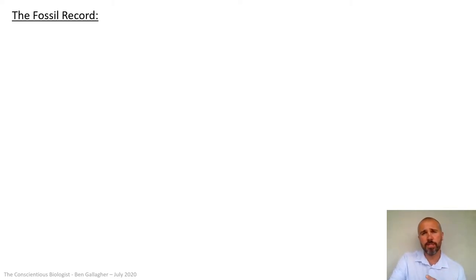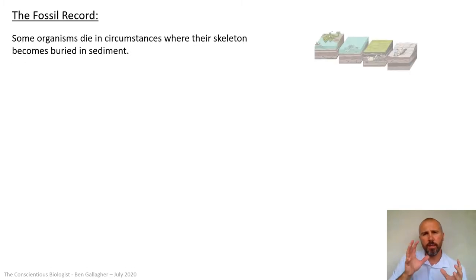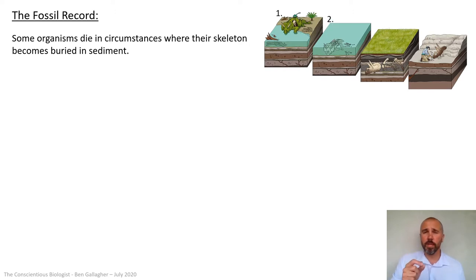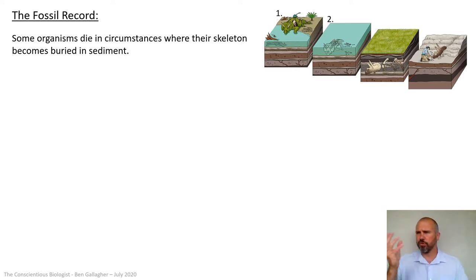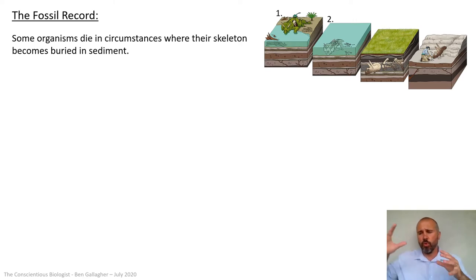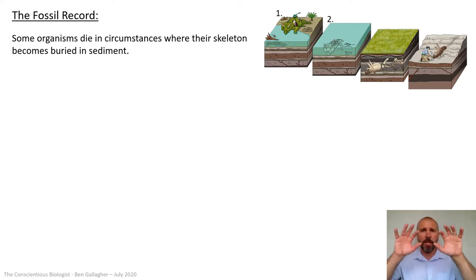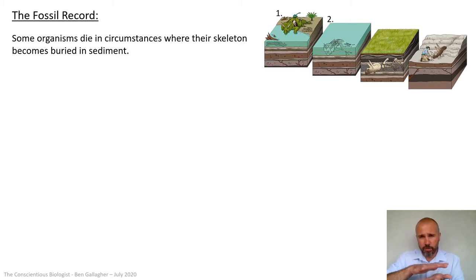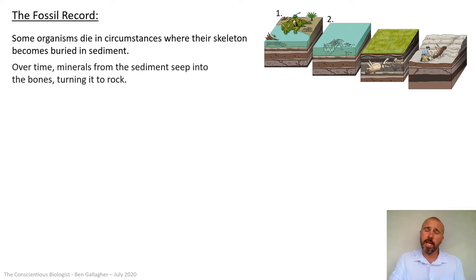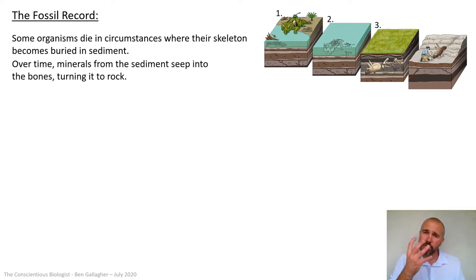When we look at the fossil record, we can look at creatures that have existed and try to sequence them. This can only happen under specific circumstances. When some organisms die in circumstances where their skeleton becomes buried in sediment, it can fossilise. If a creature dies by water — by a river, lake, or ocean — the water washes it out, it sinks, all its flesh rots off, and tiny particles of silt and rock settle down on top of the skeleton and compress it.